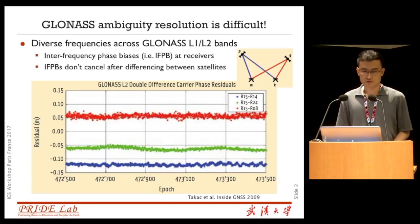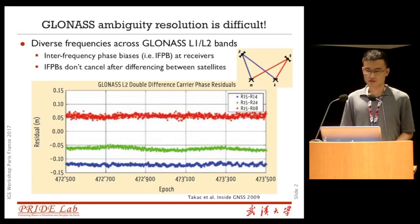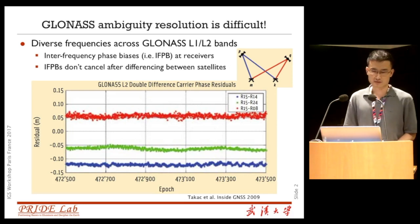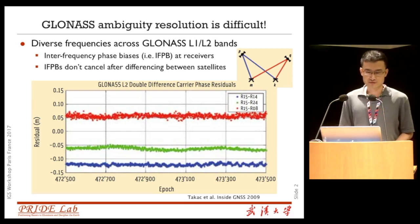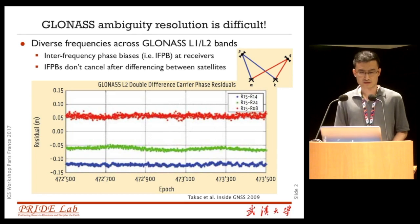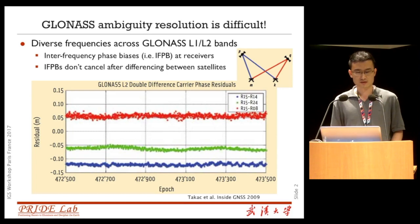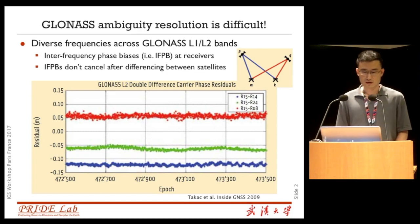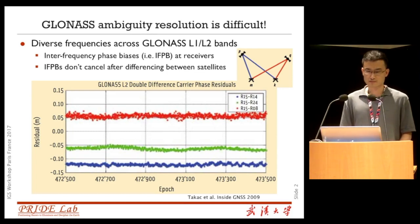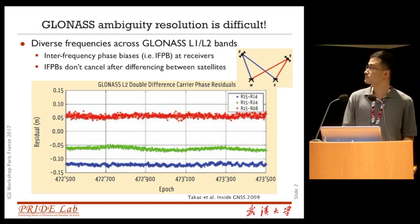As we all know, GLONASS ambiguity resolution is difficult, especially for long baselines. Because of the diverse frequency across GLONASS L1 and L2 bands, the interfrequency phase bias exists at receivers and it cannot cancel after differencing between satellites.